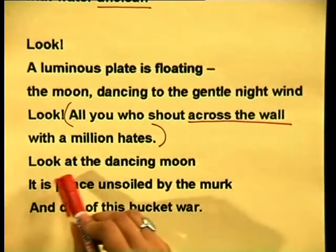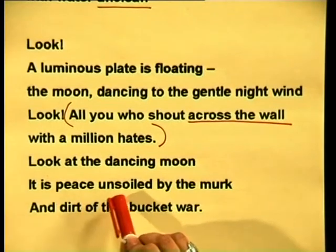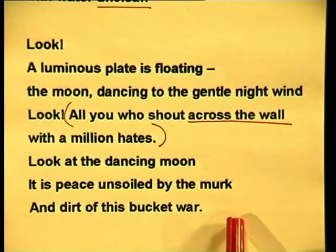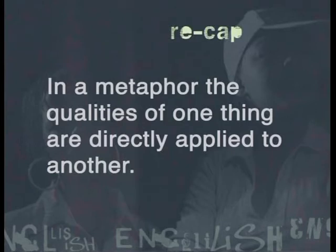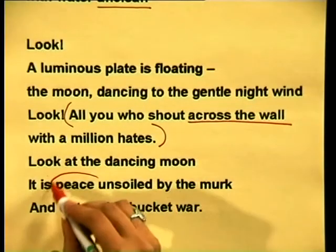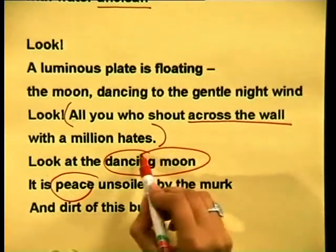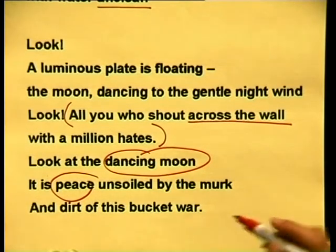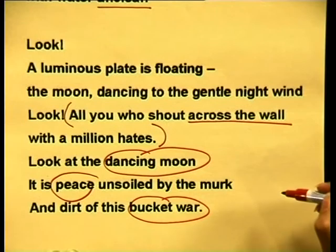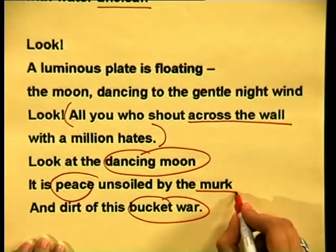The poet uses a comparison in the last three lines. Can you work out what type of figure of speech this is? Look at the dancing moon — it is peace, unsoiled by the murk and dirt of this bucket wall. It is a metaphor. In a metaphor, the qualities of one thing are directly applied to another. Peace is compared to the dancing moon, and the bucket is compared to the war raging between the races in this country at the time. The poet makes the characteristics of war equal to the characteristics of the water in the bucket — the murk and dirt.